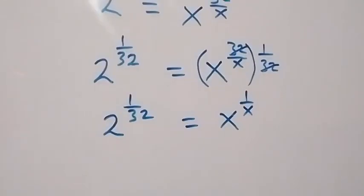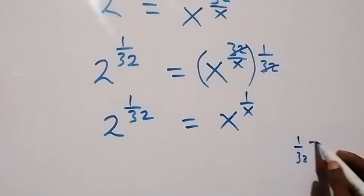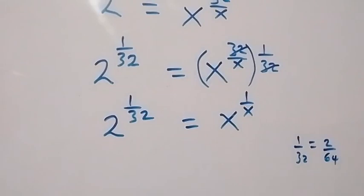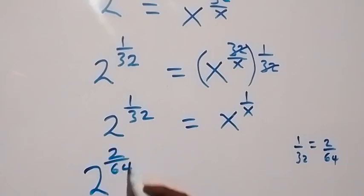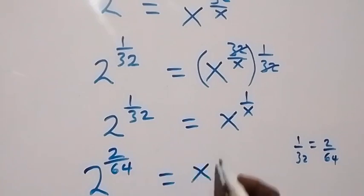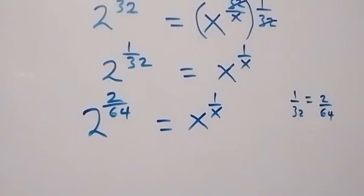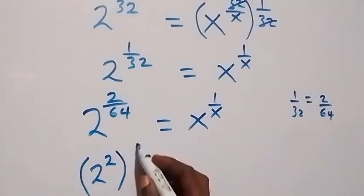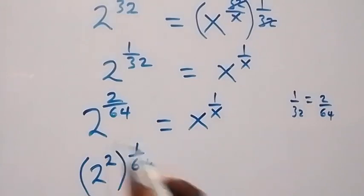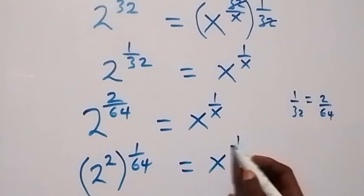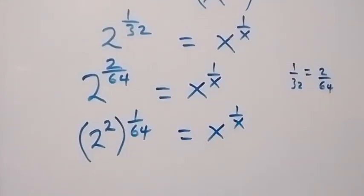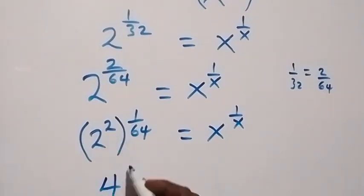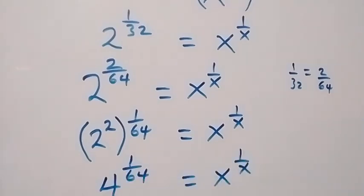Now, we can equally write 1 over 32 as 2 over 64 as an equivalent fraction. This will become 2 raised to power 2 over 64, which equals to x raised to power 1 over x. We can write this as 2 raised to power 2, times 1 over 64, and separate this using the law of indices. That gives us 4 raised to power 1 over 64, equals to x raised to power 1 over x.